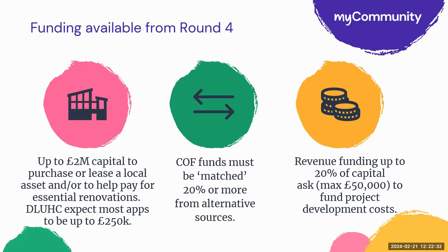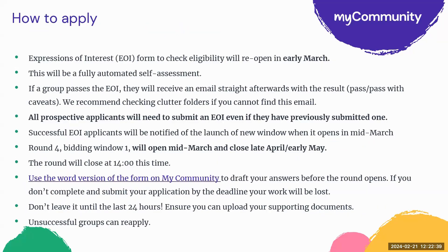It's important to note that grants have to be spent within 12 months of receiving an offer letter. Expressions of interest forms to check eligibility will reopen on the Department of Levelling Up website in early March. The EOI form is going to become a fully automated self-assessment. If a group passes the expression of interest, they will receive an email straight afterwards with the result, which will either be a pass or a pass with caveats. We recommend you check your clutter folders if you cannot find this email after submitting your expression of interest form. All prospective applicants will need to submit a new EOI, even if they have previously submitted one.